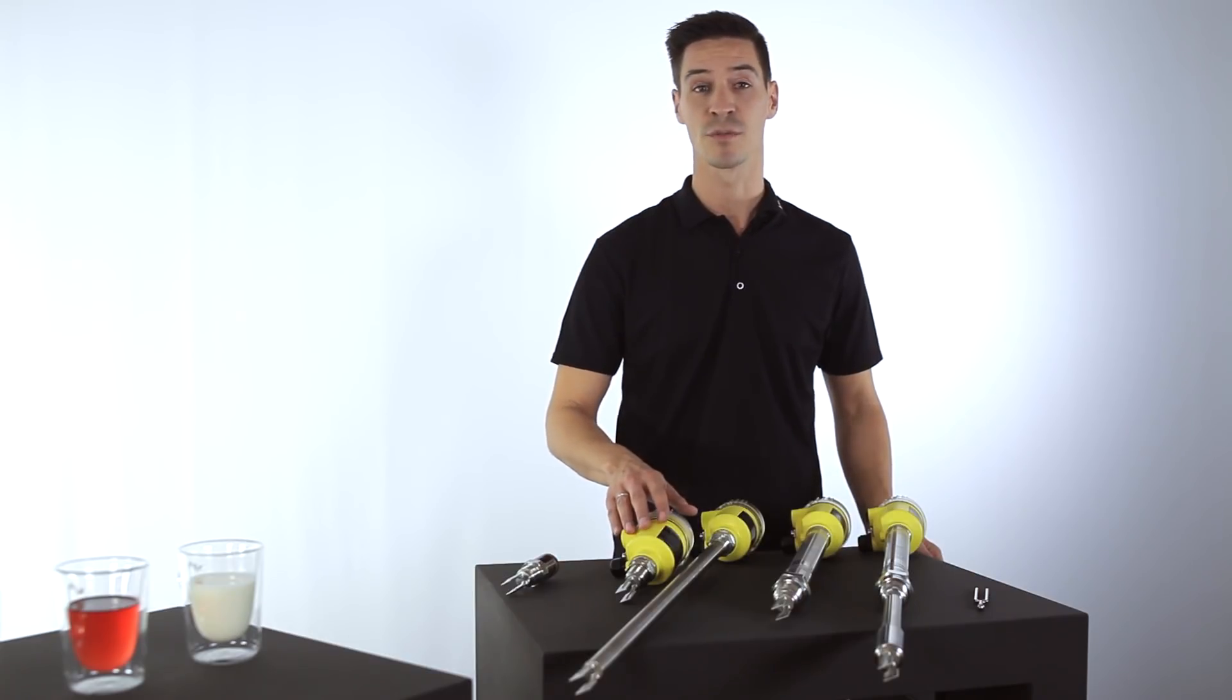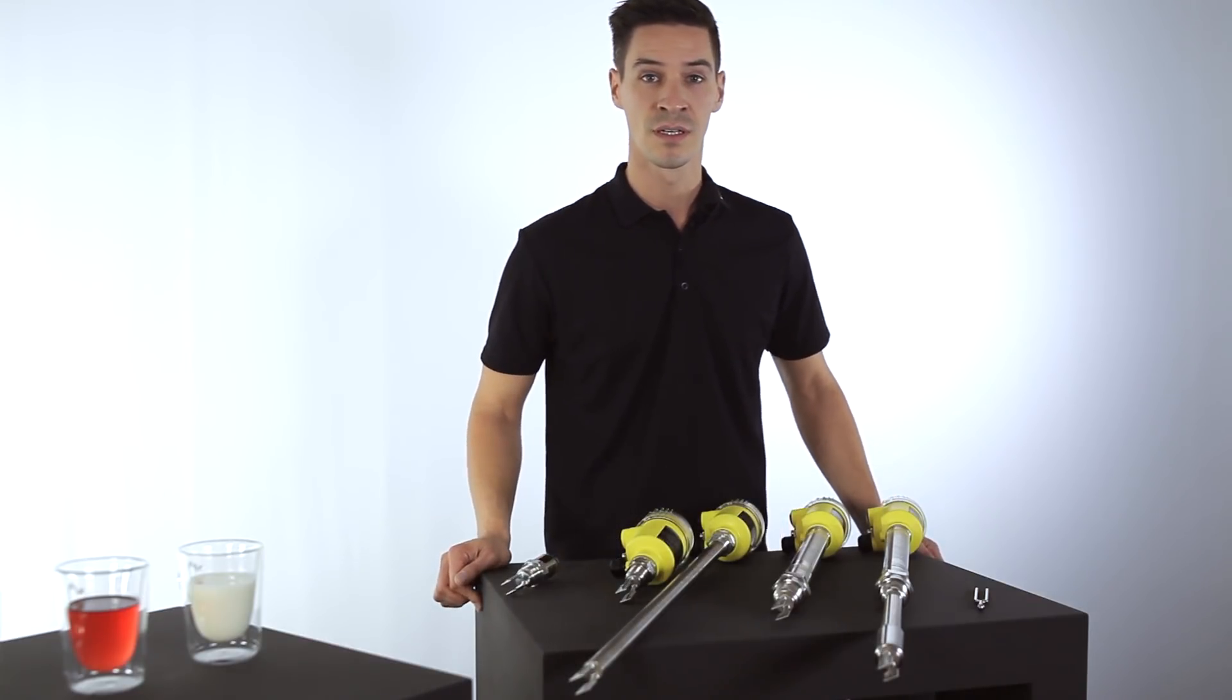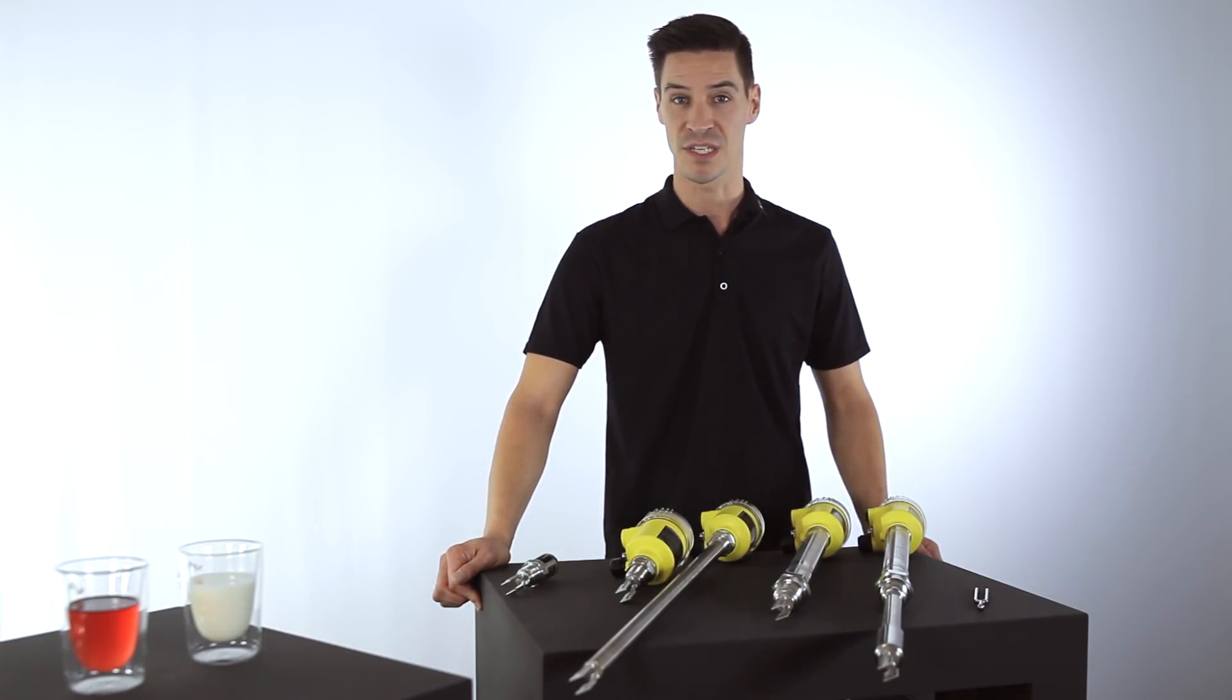And of course, a wide range of materials and coatings. Last but not least, the royal class: the Vegavib Wing 66, the vibration point level switch for extreme conditions, up to 450 degrees Celsius and a pressure of 160 bar.